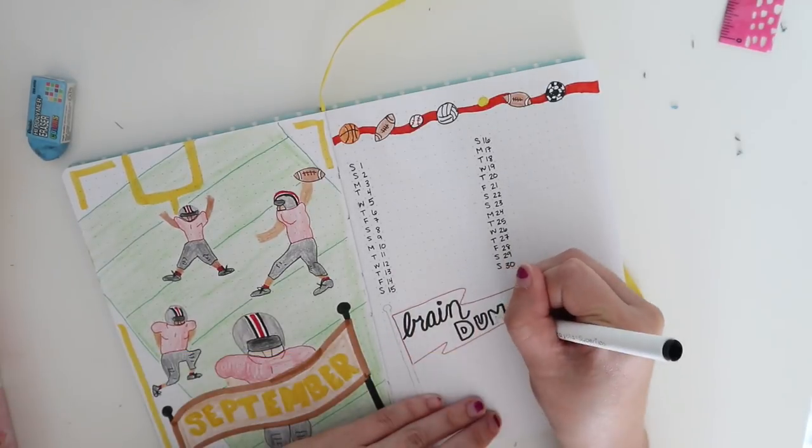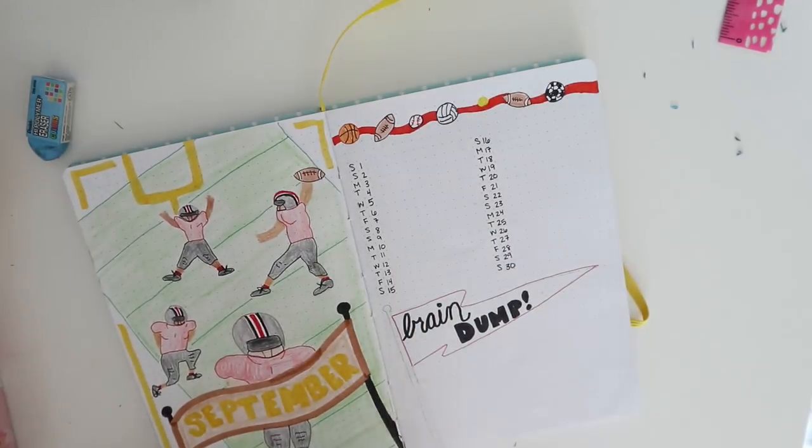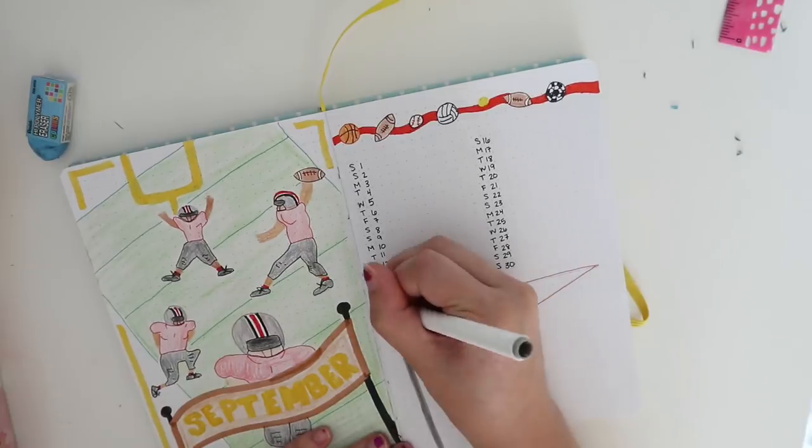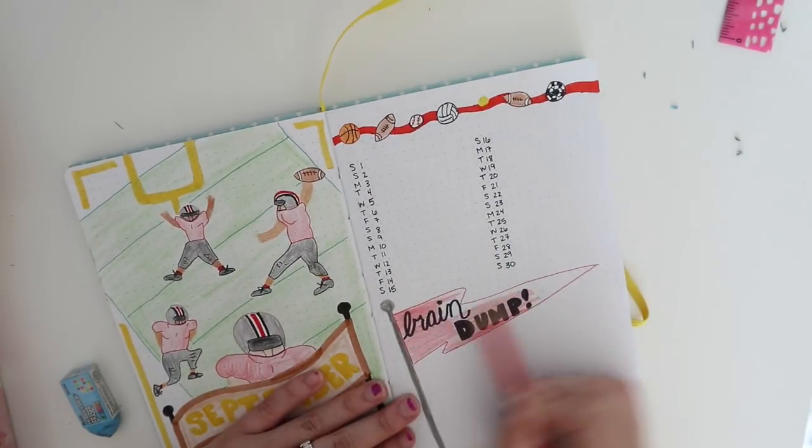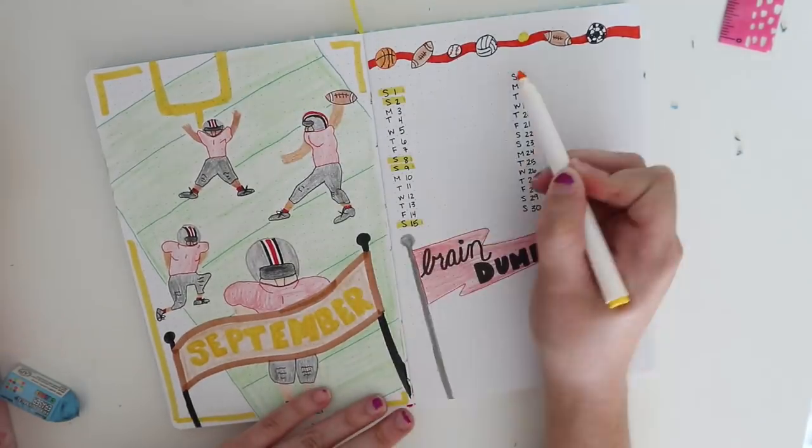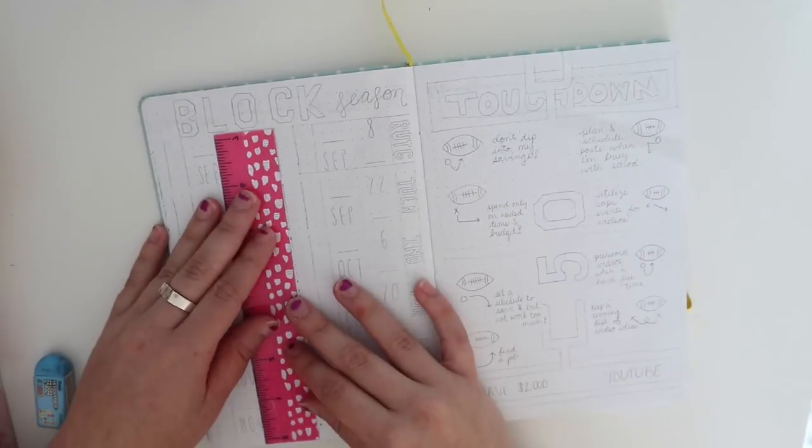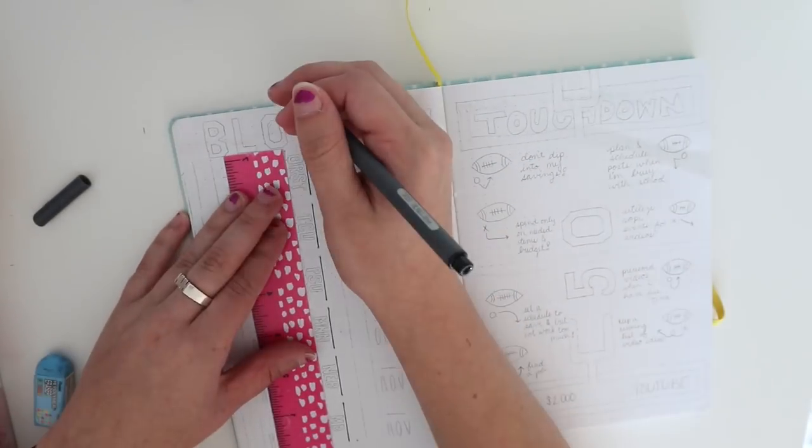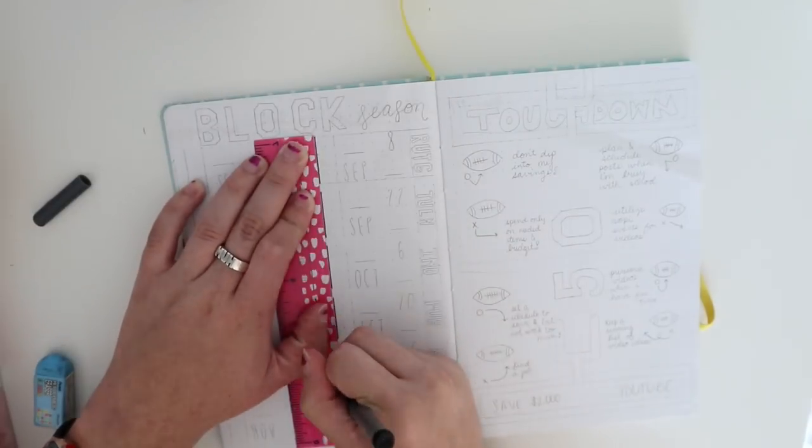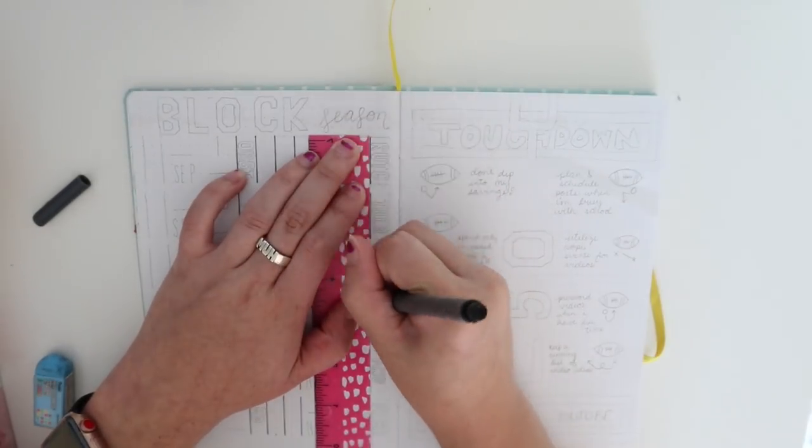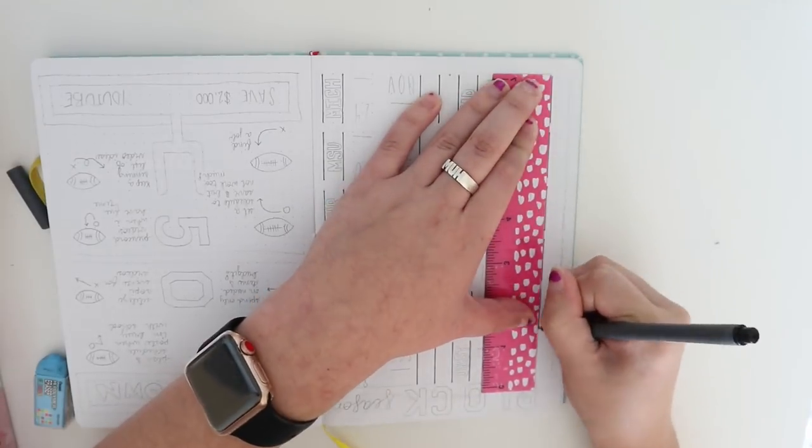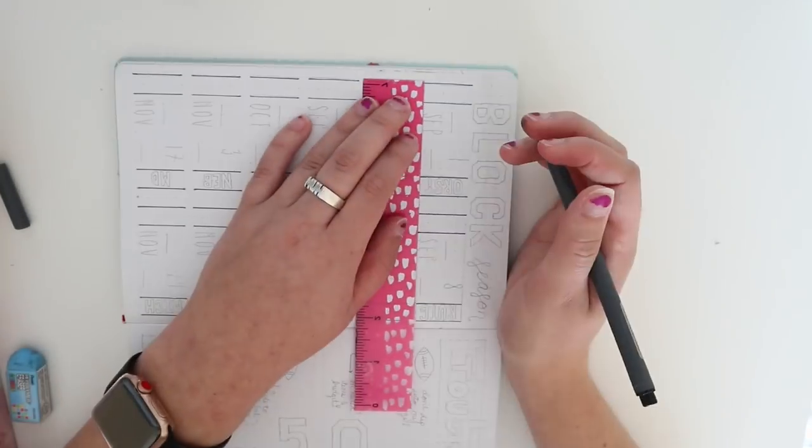The next page is a super fun page that I'm really excited for because like I said, OSU starts their football season in September and of course I have tickets. So this page is kind of my tracker to keep track of when the games are, who we're playing, and then at the end to keep track of the score after all of the games.